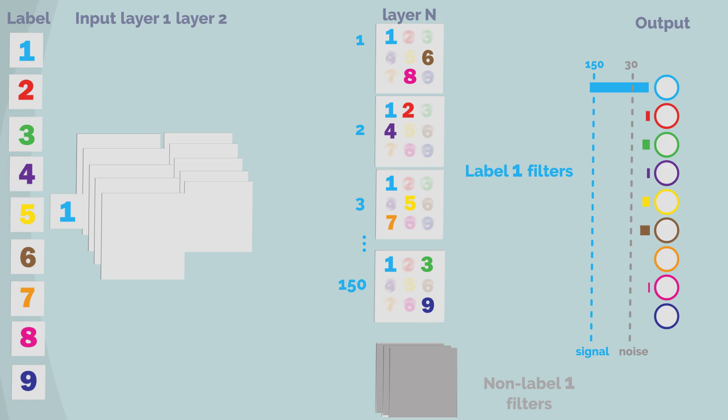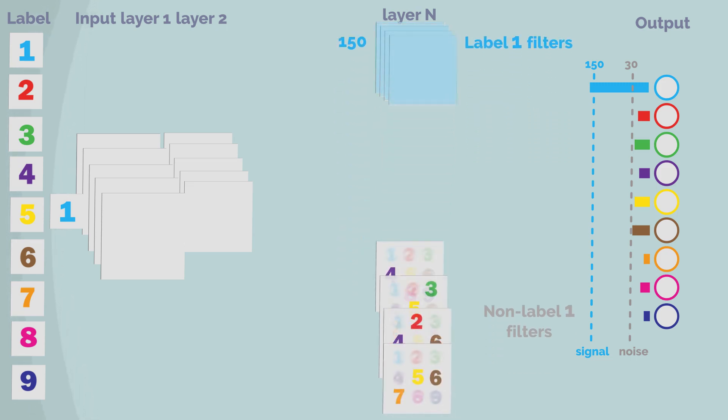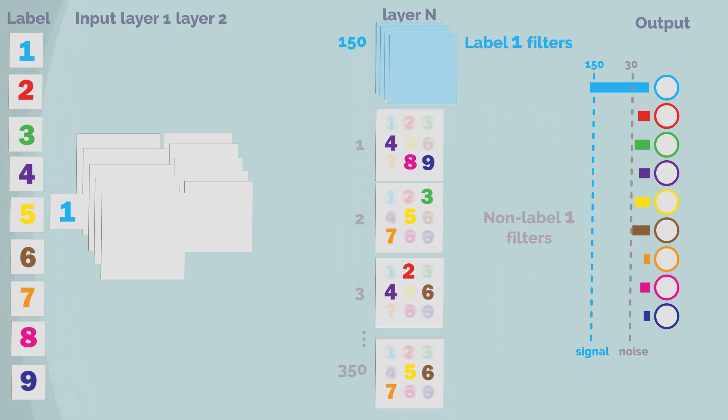The rest of two labels of each filter contribute on average a small noise on the other output units. The rest of the 350 non-label 1 filters contribute a small noise on each output unit. This enables the network to recognize a specific input.